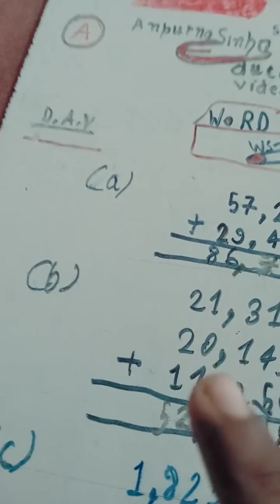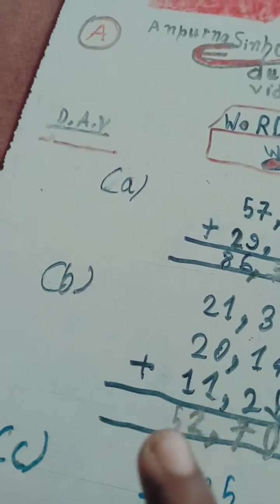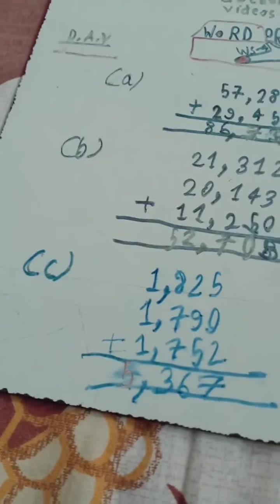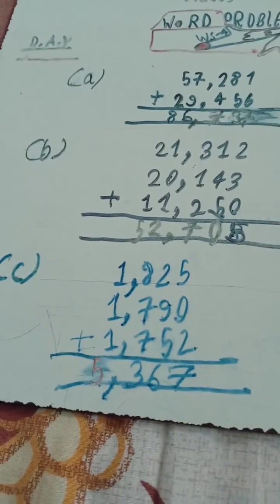1, 0, 1 hota hai. 1 plus 1 is 2, here 2 plus 2 is 4, 1, 5, then 52,75. Here 1,125, 1,790, 1,792.